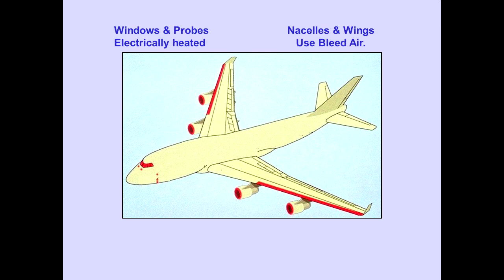Windows and probes are electrically heated to prevent icing. Leading edges of nacelles and wings use bleed air for heating. Let's first look at ice and rain protection features for windows.